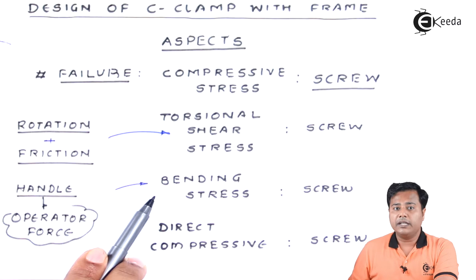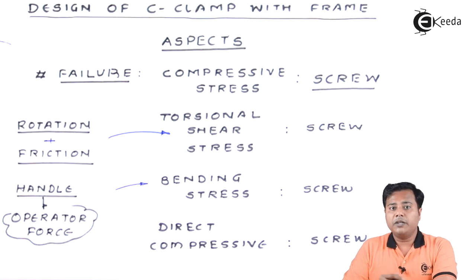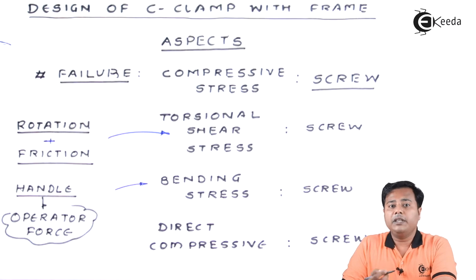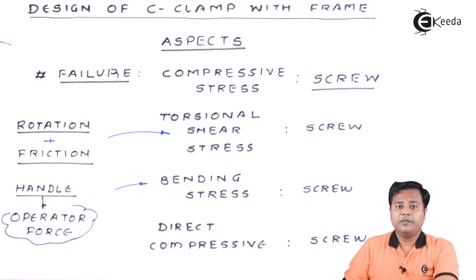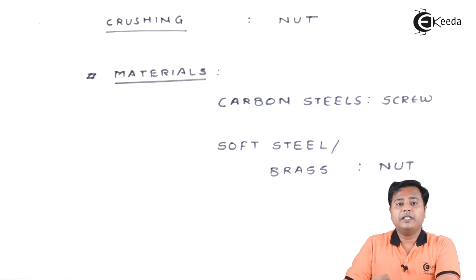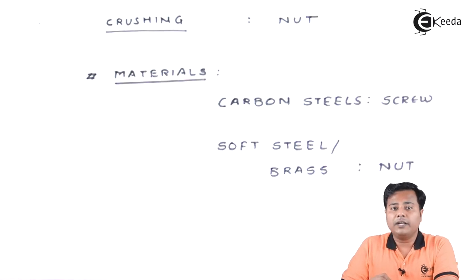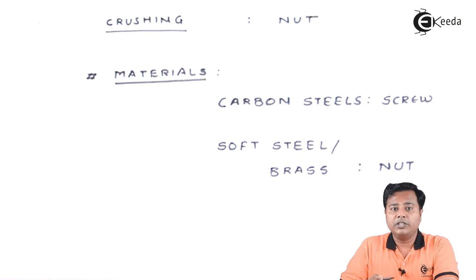We need to design the C-frame in two parts. The first part will be the power screw and the second will be the nut, and that's why we need to consider all of them. As far as the nut is concerned, only one factor we need to consider — that is crushing — because the nut will undergo crushing because of the applied load and the object under which it is kept.